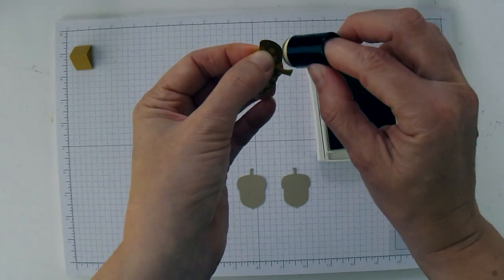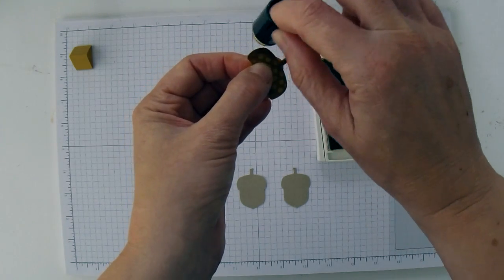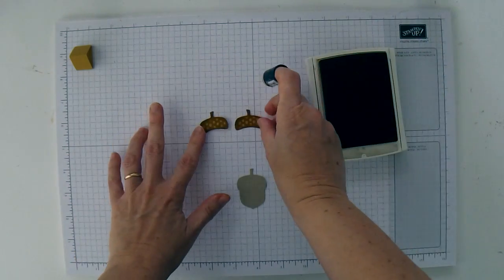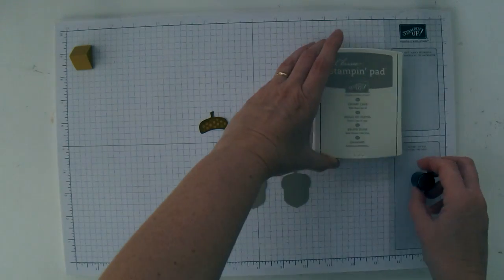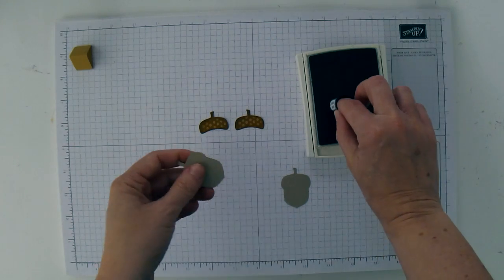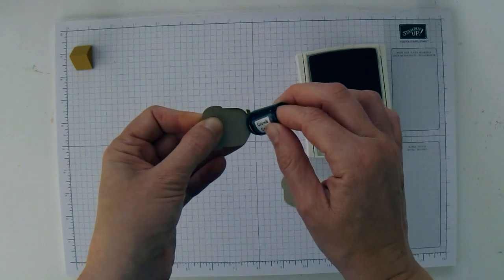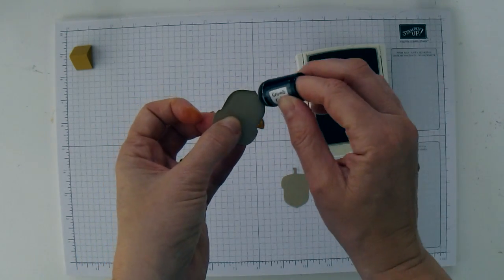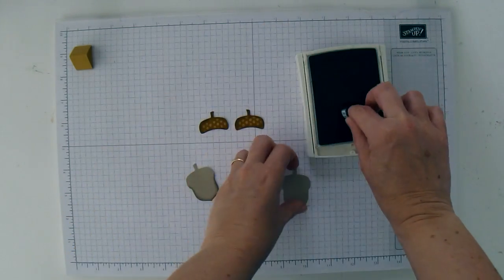And I'm also going to do the stem, make sure that's nice and deep. And that looks pretty good. And now I'm going to also sponge my bases in crumb cake ink. And I've got another sponge dauber designated just for crumb cake ink. I'm just going to go around the edges because I've looked at it both ways and I really like these acorns sponged. They look a lot cuter.